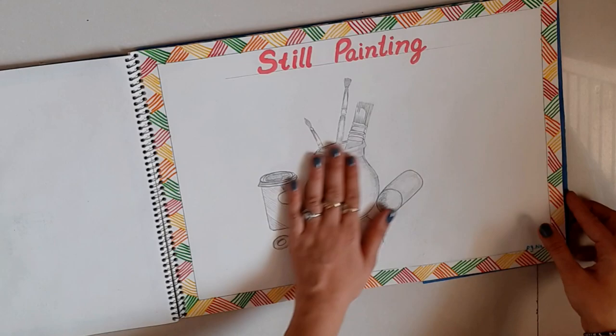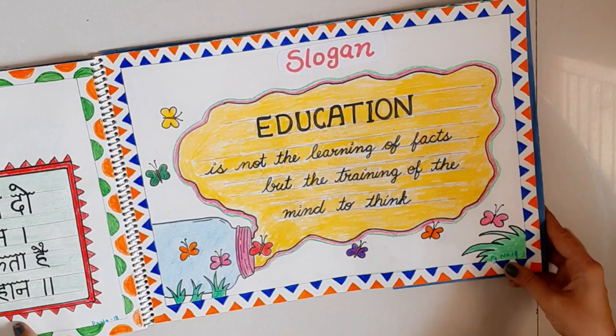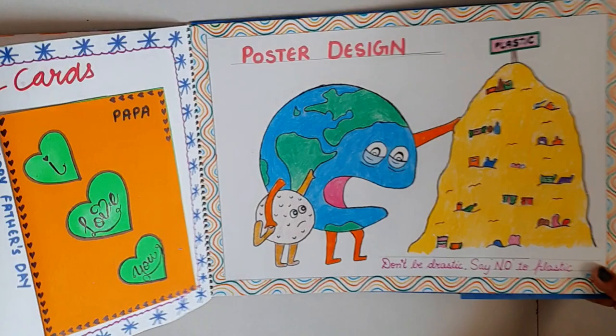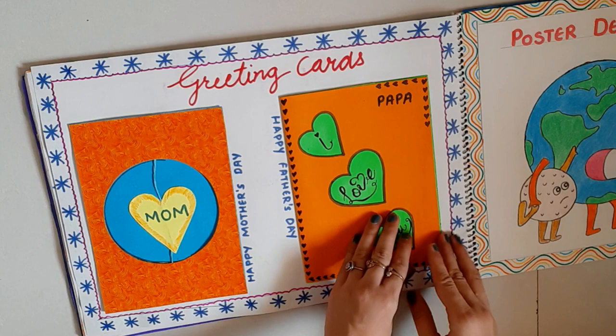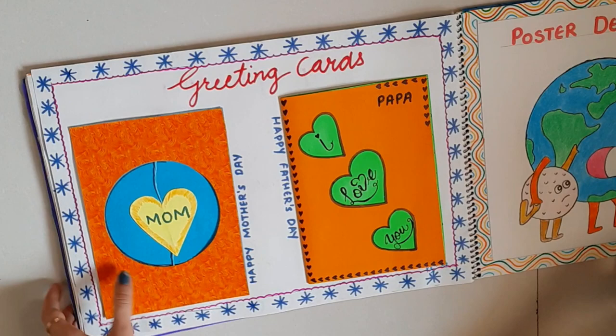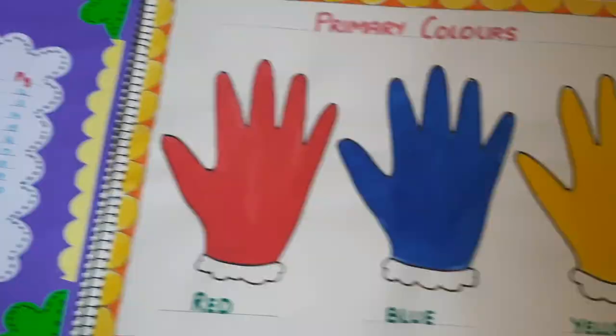The next color design is still painting. The next one is spray painting done with a toothbrush. Then greeting cards — I have made two of them, for mother and father, but you can make three. The next one is poster design — this one says 'Say No to Plastic' — you can make any design. The last page is our rangoli design. That was the full file.